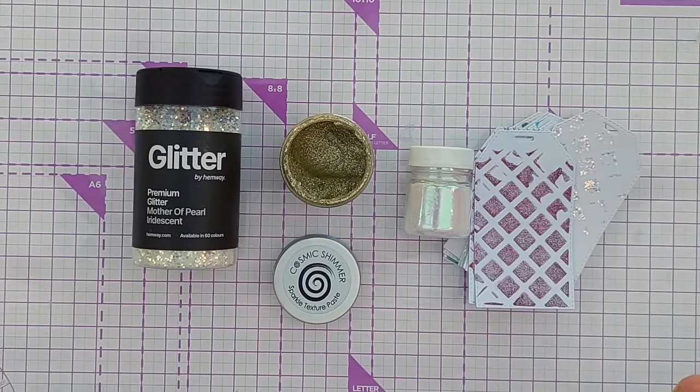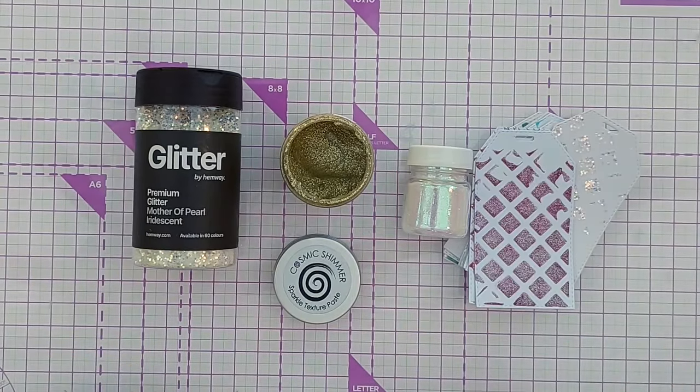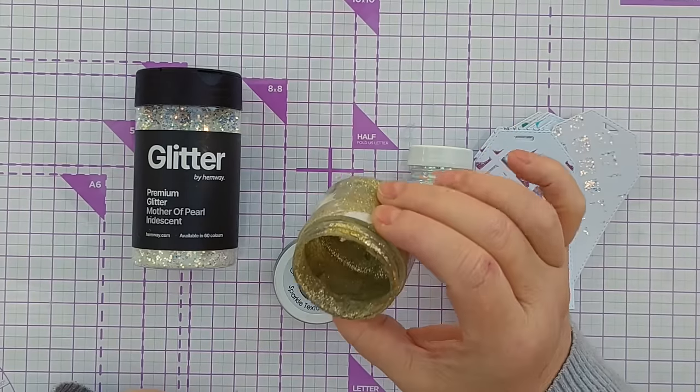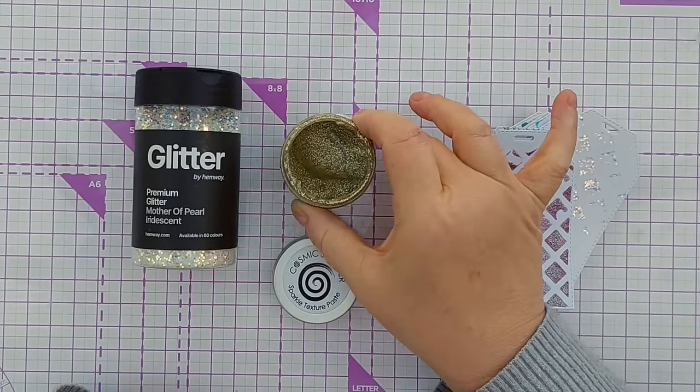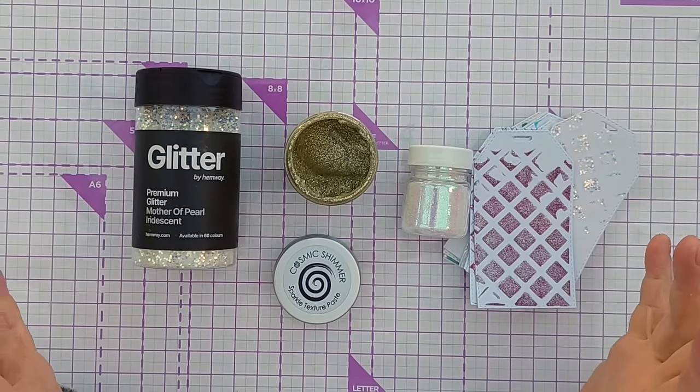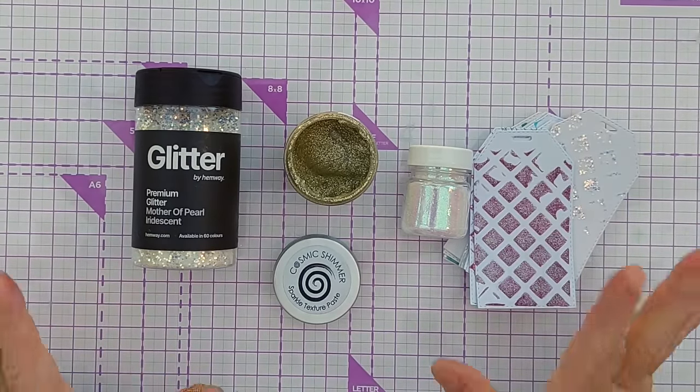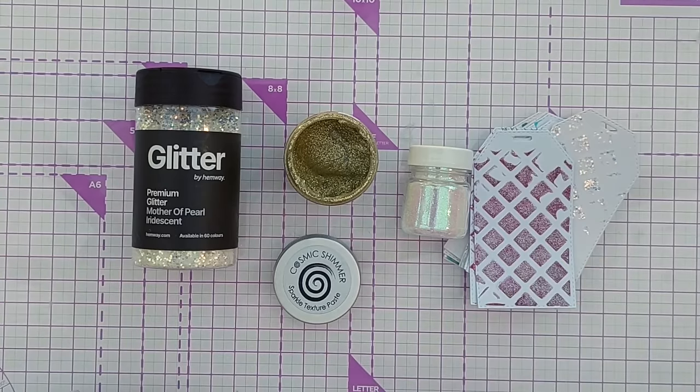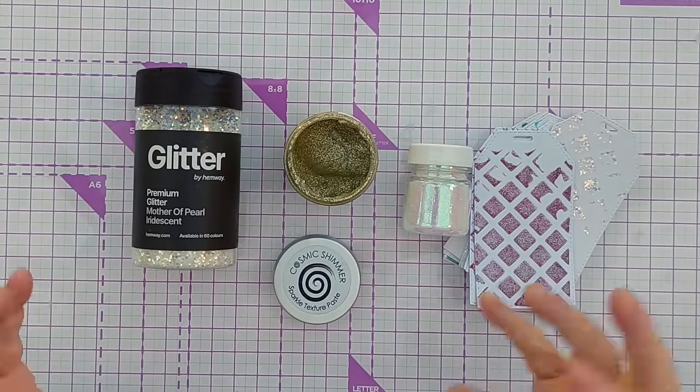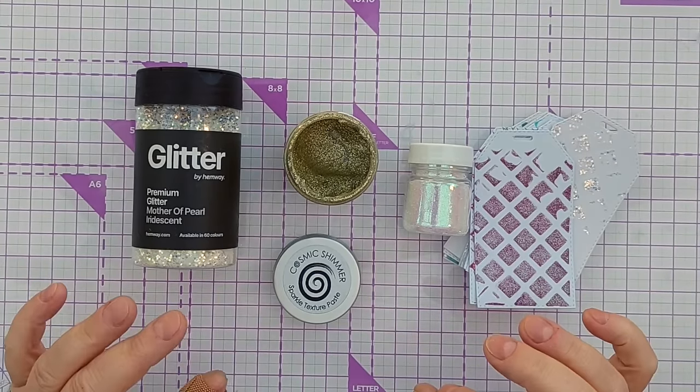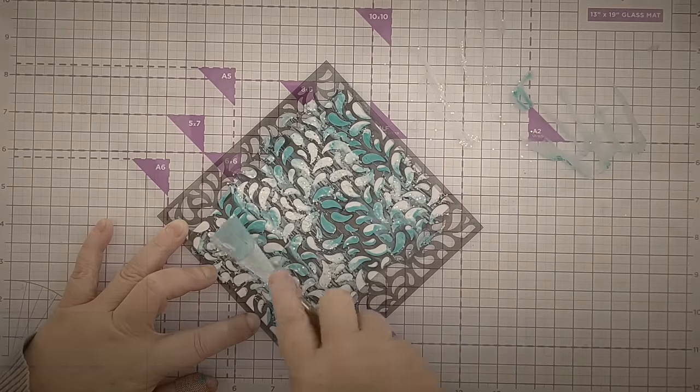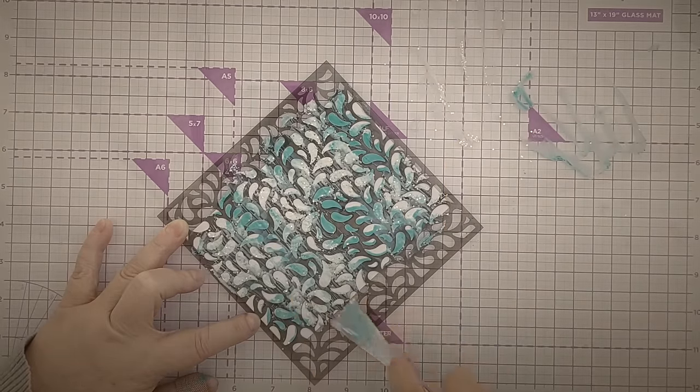Sometimes the trouble with texture pastes is you buy all the different colors, use a little bit out of each pot, and then next time it's dried up. Or they just sit on the shelf mocking you. But what if I could create just the amount I wanted for a particular session and not have lots of glitter pastes hanging around?